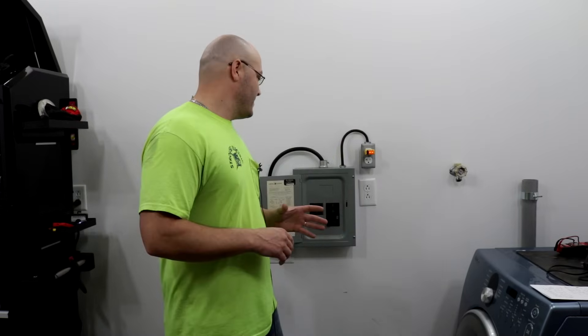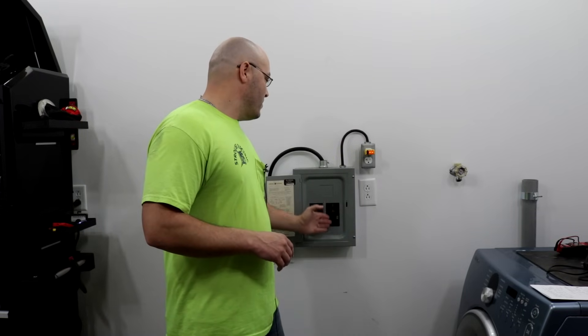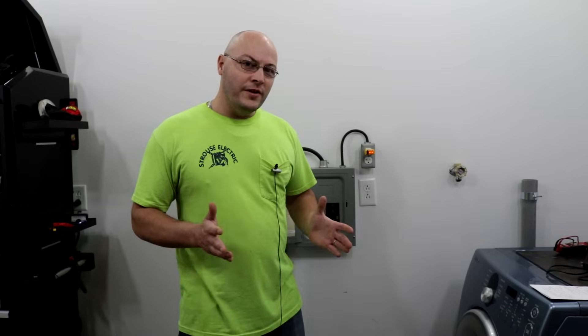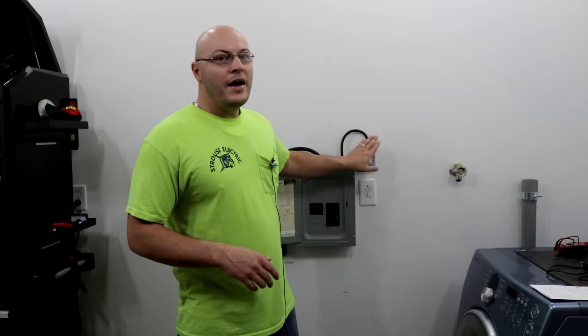But let's say no breakers are tripped. So all the breakers are on, there's nothing tripped, but you still don't have power at your outlet. So let me show you a couple of different ways you can check that. One being without tools, and then we're going to get into with a meter and a plug tester and stuff like that.